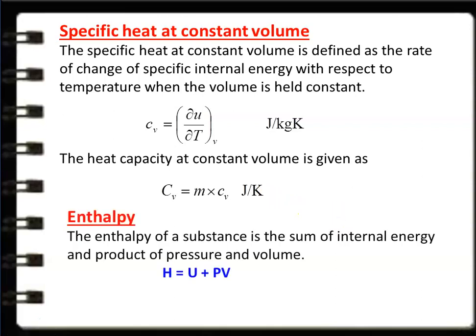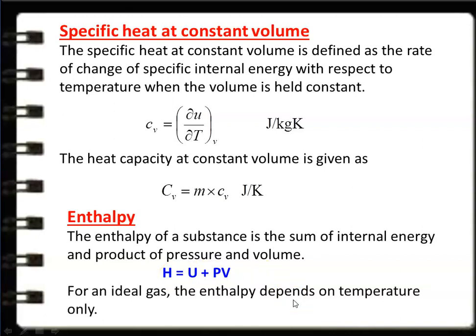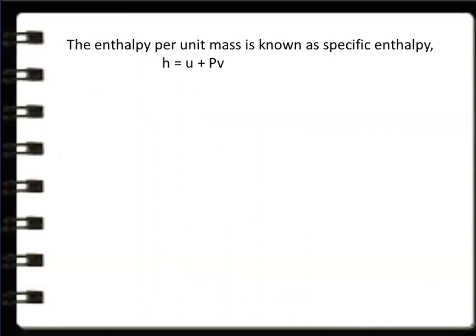Enthalpy of a substance is the sum of internal energy and the product of pressure and volume: H = U + PV, where PV is the flow energy. Internal energy plus flow energy equals enthalpy. For an ideal gas, enthalpy depends on temperature only. Enthalpy per unit mass is specific enthalpy: h = u + pv, where v is specific volume.